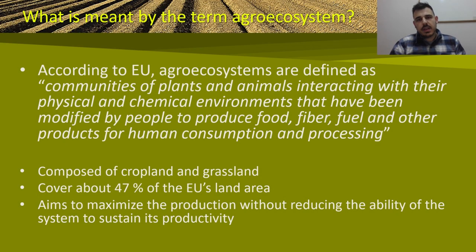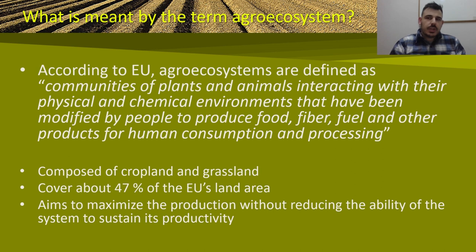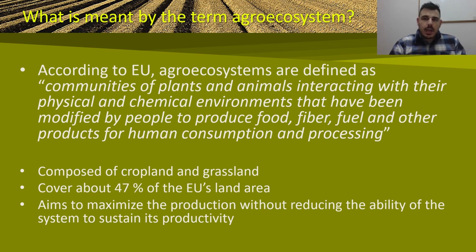What is meant by the term Agro-Ecosystem? According to the European Union, agro-ecosystems are considered communities of plants and animals interacting with the physical and chemical environments that have been modified by people to produce food, fiber, fuel and other products for humans to consume and process. Agro-ecosystems are composed by cropland and grassland, and they cover about 47% of the European Union's land area.